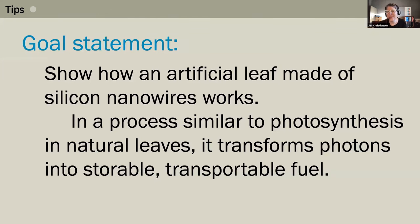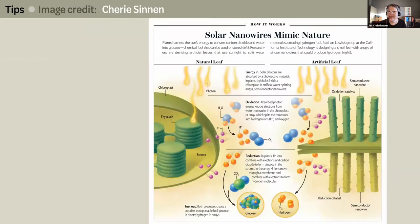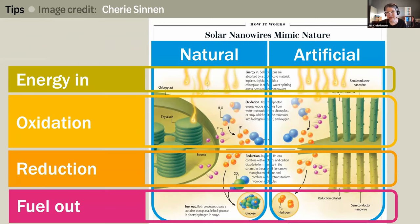One more goal statement: 'Show how an artificial leaf made of silicon nanowires works in a process similar to photosynthesis in natural leaves — it transforms photons into storable, transportable fuel.' Artist Sherry Sinnen honored the goal statement by showing not only how an artificial leaf works, but how it compares to natural photosynthesis, with each step of artificial photosynthesis aligned with the corresponding step in natural photosynthesis.